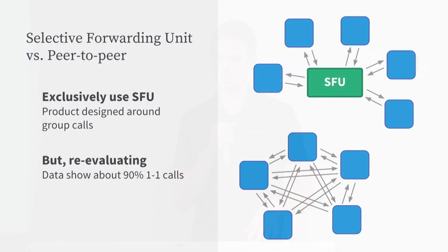One other thing I want to talk about is network topologies. In Slack, we always use an SFU-based topology — we're not actually doing peer-to-peer at all right now. That was originally based on the idea that Slack, as a workplace collaboration app, would have a large proportion of group calls. But that turned out simply not to be the case. Our data shows that 80 to 90% of our calls are actually one-to-one. So we're now reconsidering that and looking at a hybrid model where we can use both peer-to-peer and SFU-based calls.